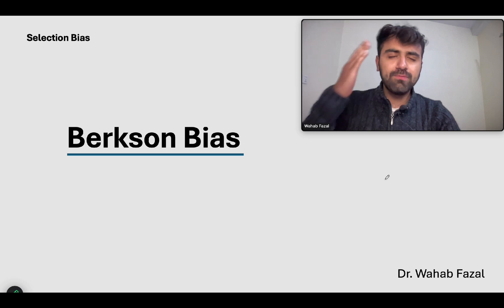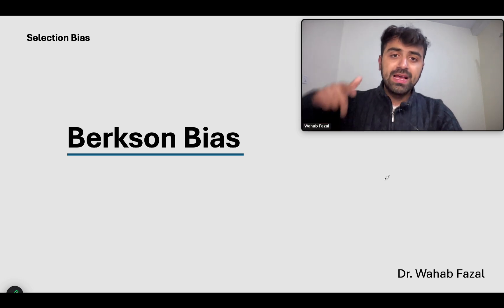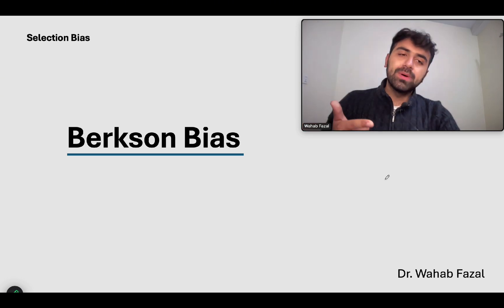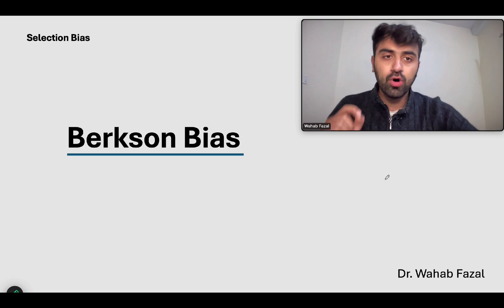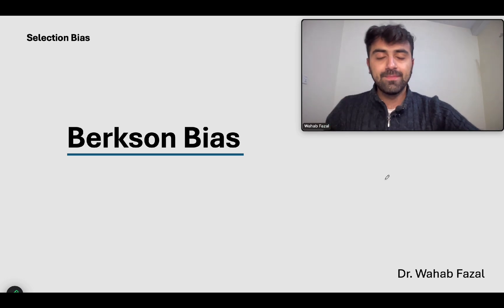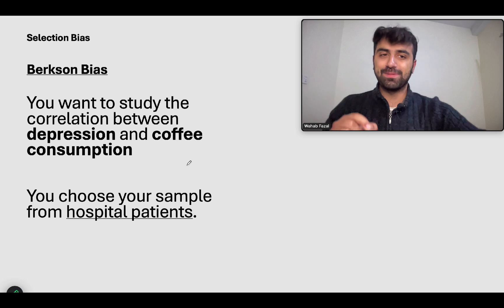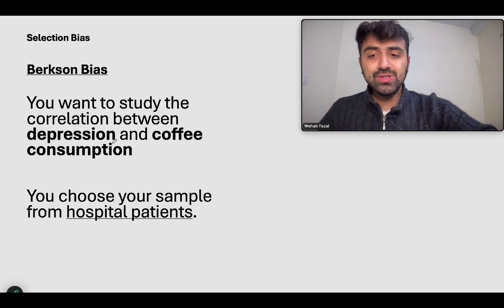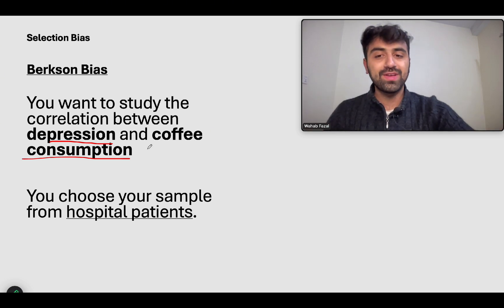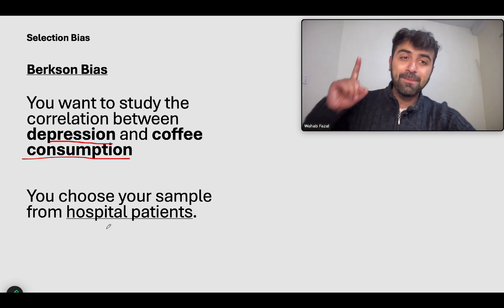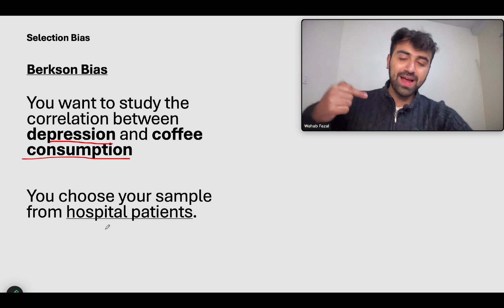Now Berkson bias — how I think of it is a very specific type of sampling bias. Sampling bias when you choose people from a hospital is basically called Berkson bias. Let's take an example: you want to study the correlation between depression and coffee consumption, and you choose your sample from hospital patients. Why is that wrong? You're making a hypothesis that applies to the general population, but you chose hospital patients — it's like measuring height in a basketball team.